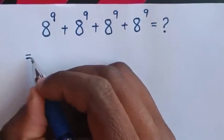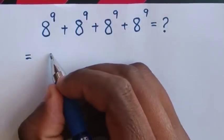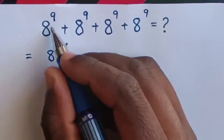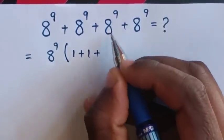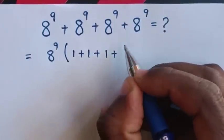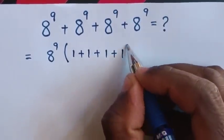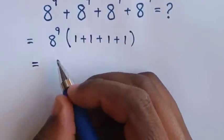This will be equal to 8 power 9 is common, so take 8 power 9 out of the bracket. This divided by this is 1, plus 1, plus 1, plus 1.